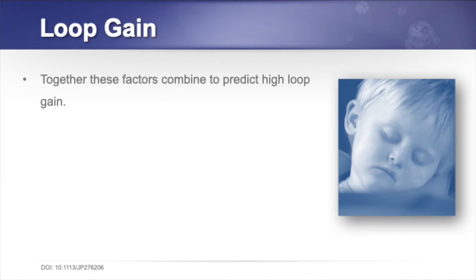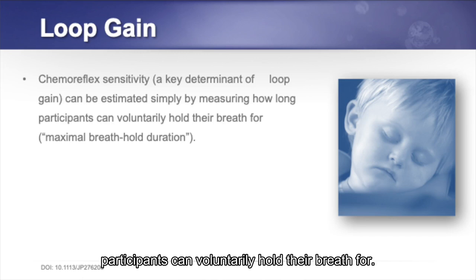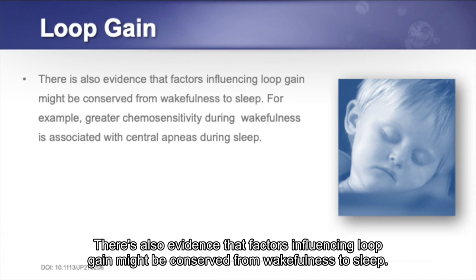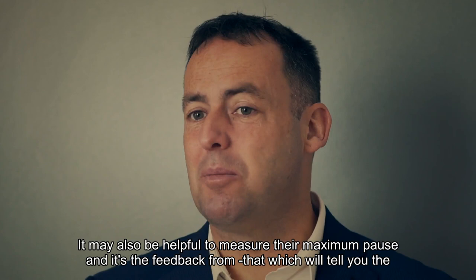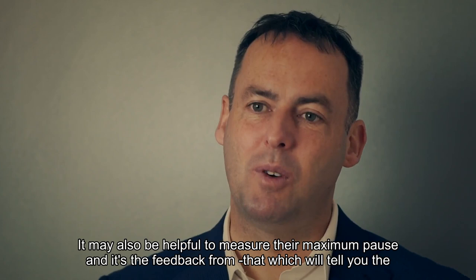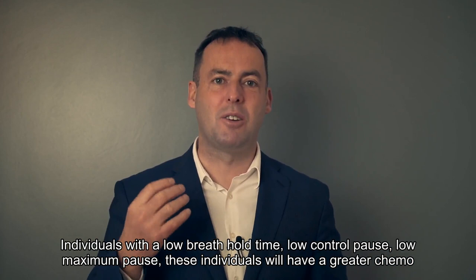Chemoreflex sensitivity — a key determinant of loop gain — can be measured simply by measuring how long participants can voluntarily hold their breath. There is also evidence that factors influencing loop gain are conserved from wakefulness to sleep; for example, greater chemosensitivity during wakefulness is associated with central apneas during sleep. For any patient presenting with OSA, measure their control pause. It may also be helpful to measure their maximum pause. Individuals with a low control pause and low maximum pause will have greater chemosensitivity to carbon dioxide.